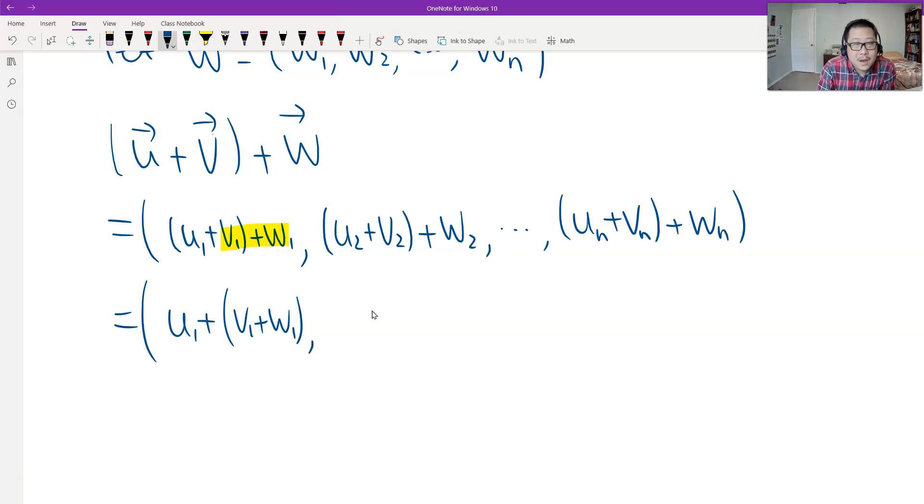And then the same for the second component, which is u2 + (v2 + w2). And then the last, which is un + (vn + wn).